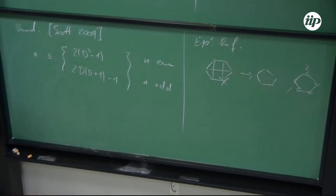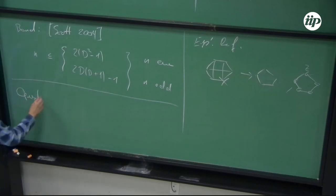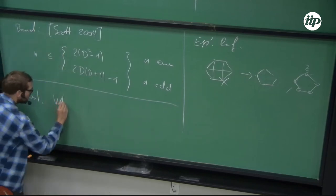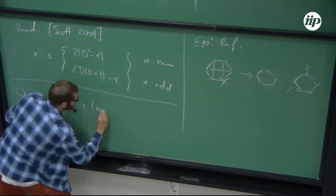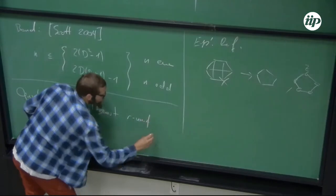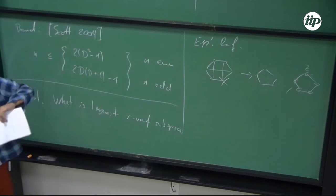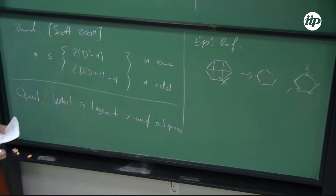An open problem is to provide better bounds for these highly entangled states and also to provide bounds for R-uniform subspaces. We can ask: what is the largest R-uniform subspace, given some N-partite system and some number R?